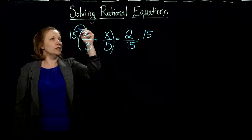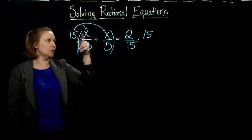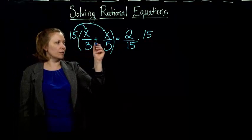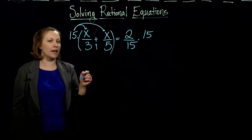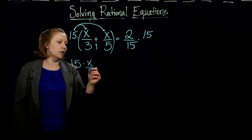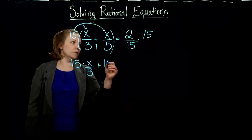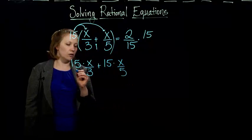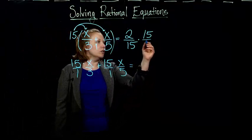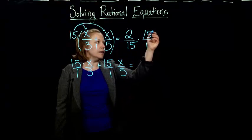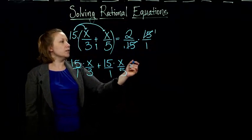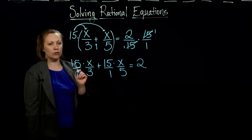If I multiply on both sides by 15, I have to distribute that 15 to each one of these terms. So they're being added together, so I have to distribute over that addition. So I get 15 times x over 3 plus 15 times x over 5. You can think of these fifteens as 15 over 1 if that's helpful to you. And then on the other side, look what happens to the fifteens. They cancel each other out, leaving us with just 1. And so we're just left with 2 over here.